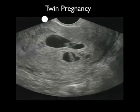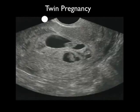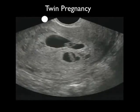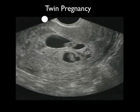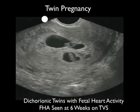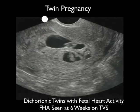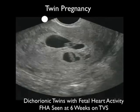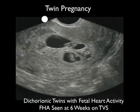Here's an interesting video clip showing a twin pregnancy. We see two gestational sacs signifying dichorionic twins, and within each gestational sac we can see little fetal poles with a flicker of heartbeats. Recall that fetal heart activity is seen at about 6 weeks on transvaginal sonography and about 7 weeks on transabdominal sonography.